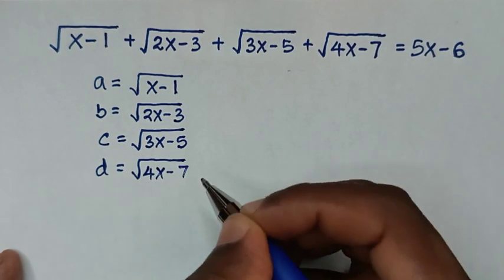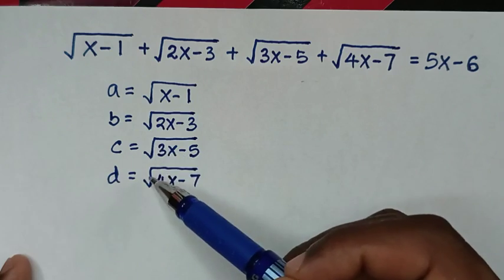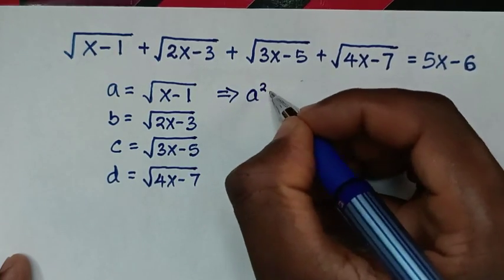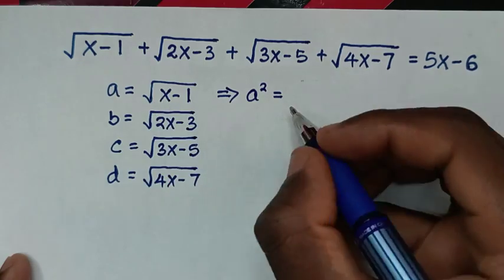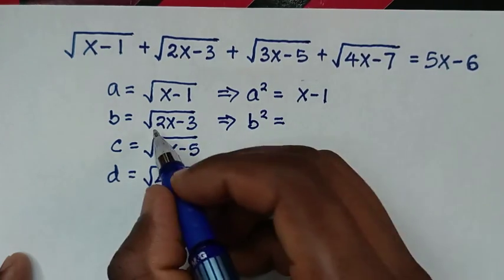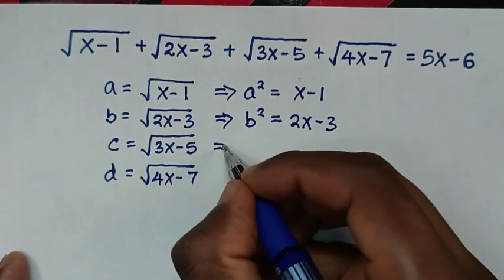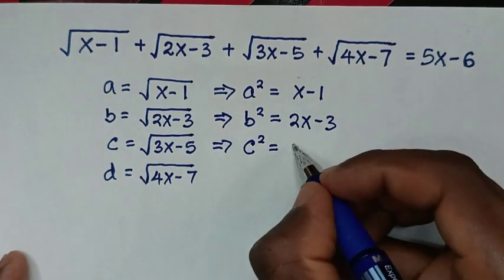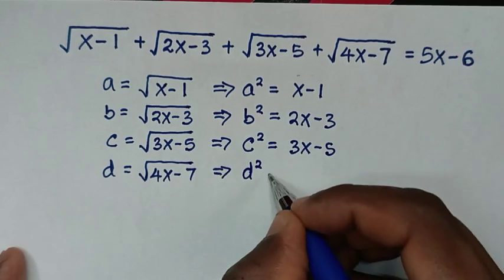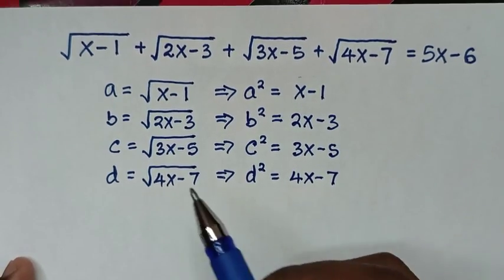In the next step, to remove these square roots we square both sides. So a squared equals x minus 1, b squared equals 2x minus 3, c squared equals 3x minus 5, and d squared equals 4x minus 7.